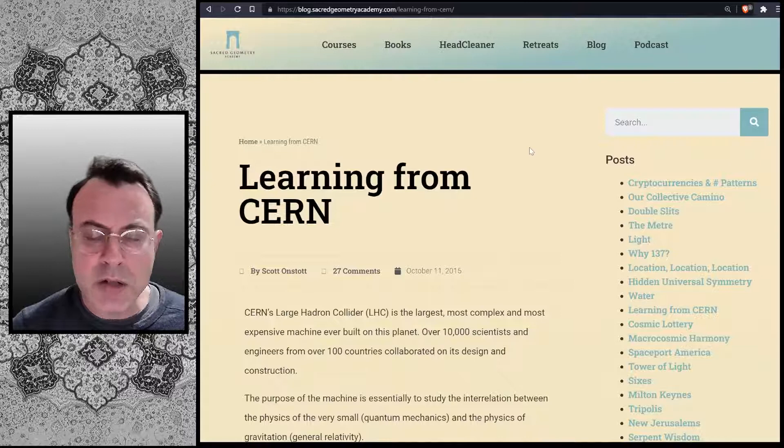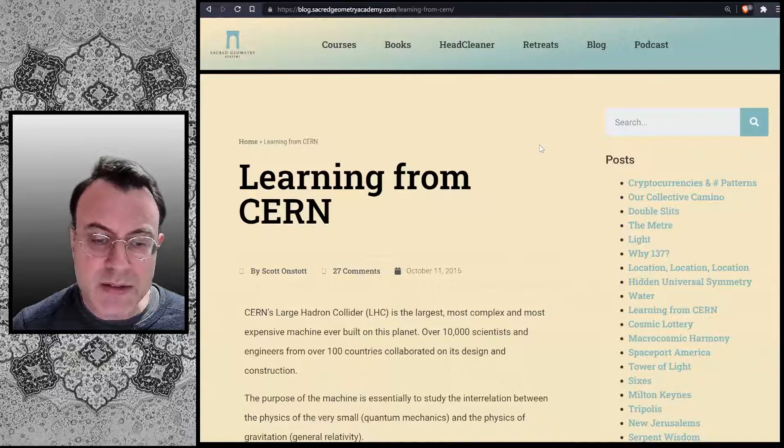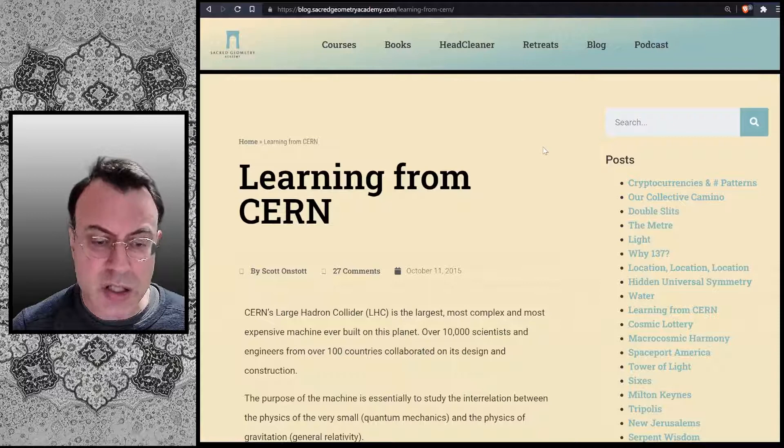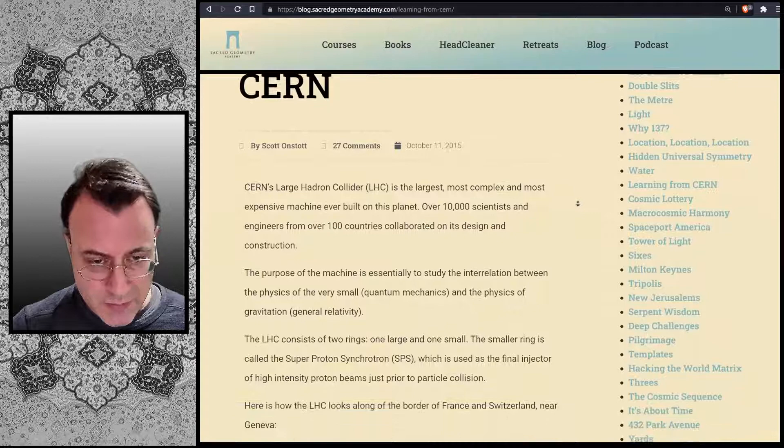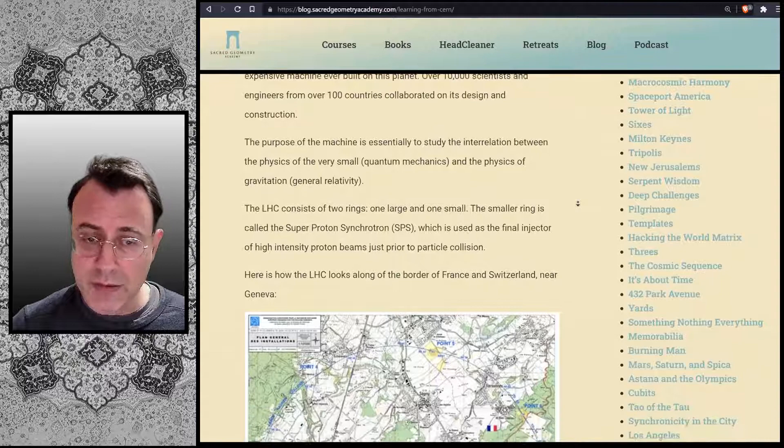Learning from CERN. CERN's Large Hadron Collider, or LHC, is the largest, most complex, and most expensive machine ever built on this planet. Over 10,000 scientists and engineers from over 100 countries collaborated on its design and construction. The purpose of the machine is essentially to study the interrelation between the physics of the very small, quantum mechanics, and the physics of gravitation, general relativity.